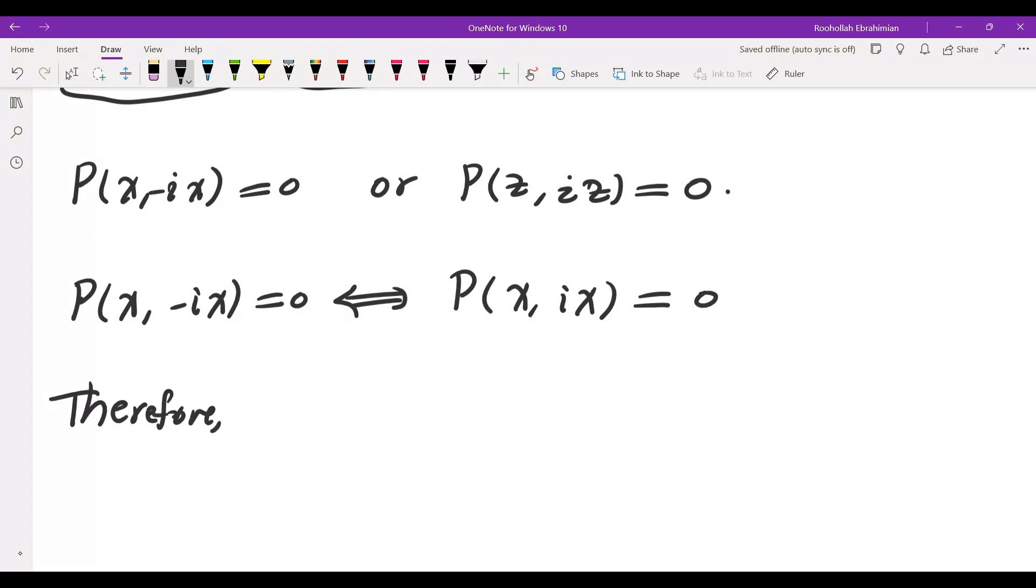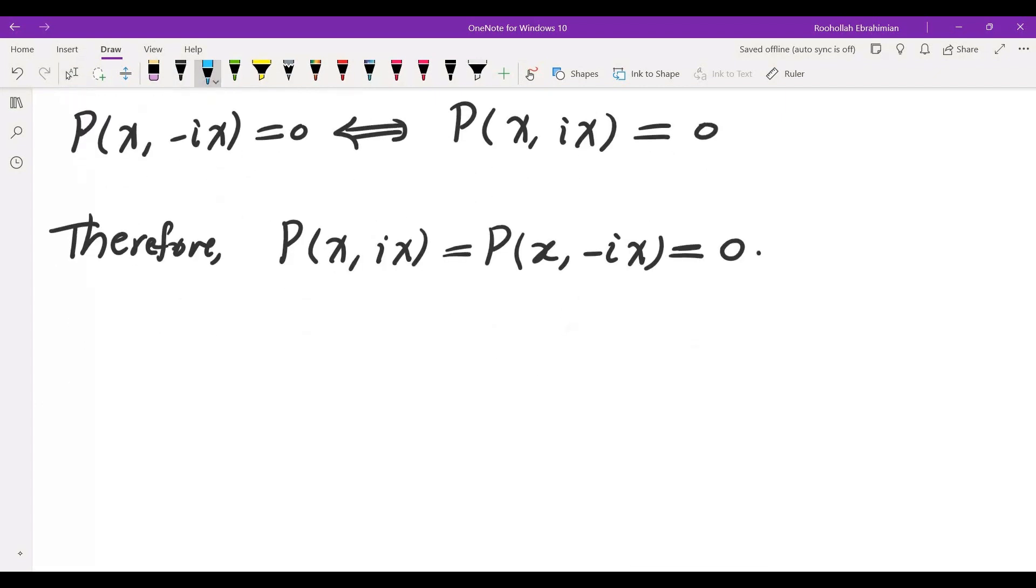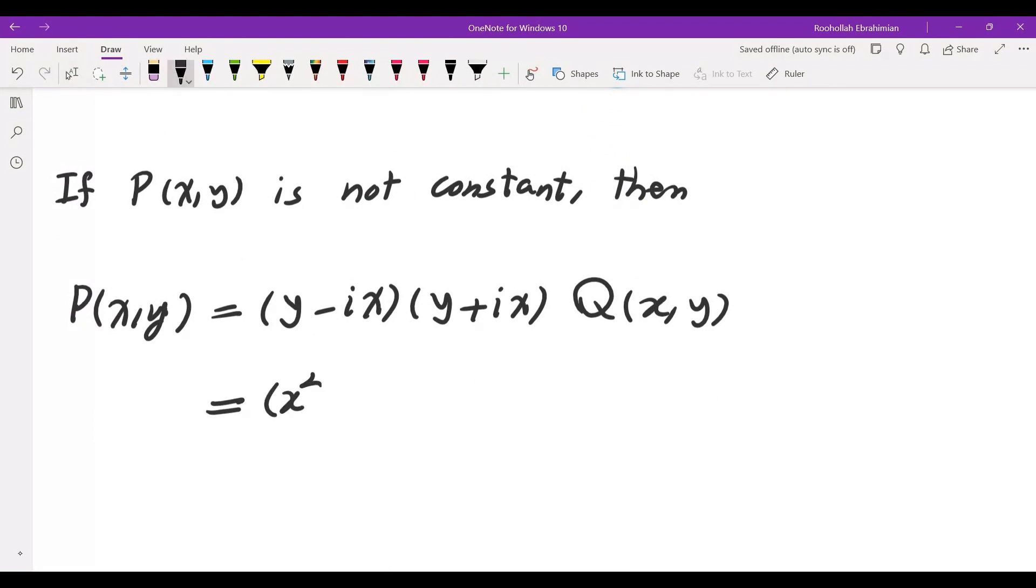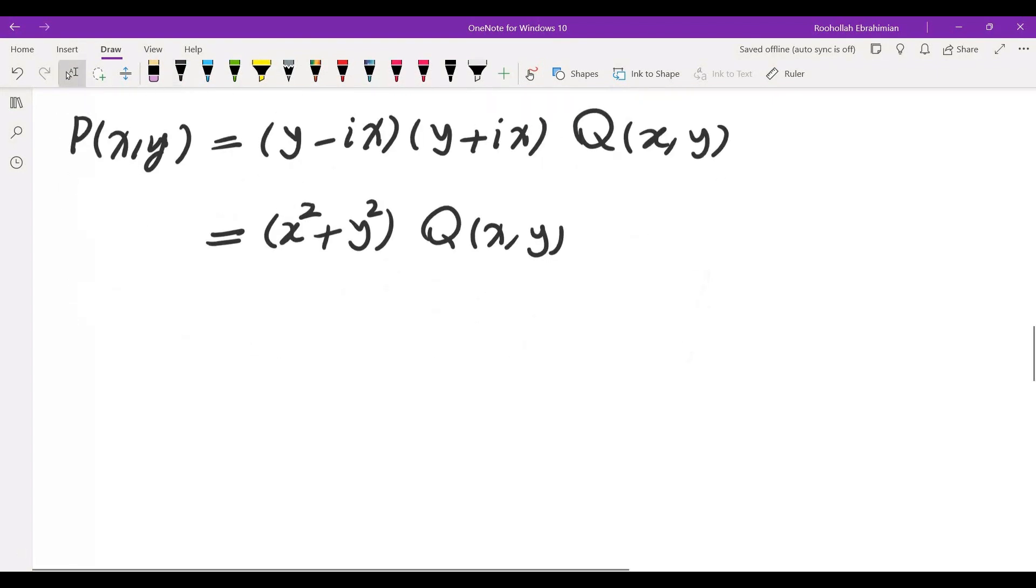So therefore P of X comma IX and P of X comma negative IX are both 0. So what does that mean? It means the polynomial has a factor of Y minus IX and also has a factor of Y plus IX. So if P is not constant then I would have P of X comma Y is equal to I have a factor of Y minus IX and I have a factor of Y plus IX from that polynomial. Okay so I would get this but this is just clearly X squared plus Y squared times Q of X Y and of course Q of X Y is another polynomial with real coefficients. Now let's take this and plug it into the identity that they gave us.